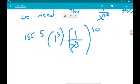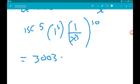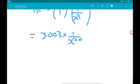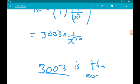That's going to give us 3,003 times 1 over x to the power of 30. Then remember we got the x to the power of 30 on the outside, so when we multiply that by this term, we just get 3,003 as the constant. Cool.